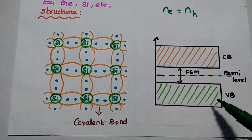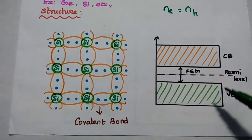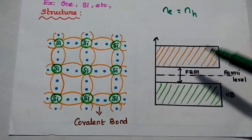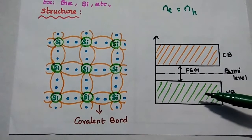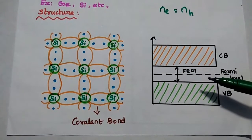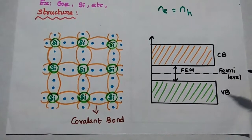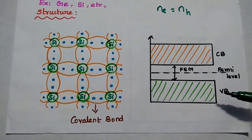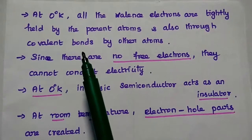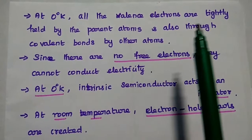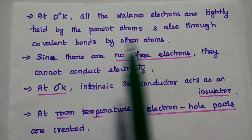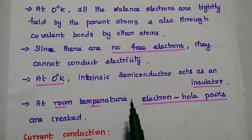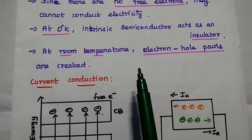This is the energy band diagram of the intrinsic semiconductor, showing the valence band and conduction band. Since the number of electrons in the conduction band and the number of holes in the valence band are equal, the Fermi level lies at the midpoint of the forbidden energy gap. The Fermi level is the highest energy level that an electron can occupy at 0 Kelvin. At 0 degrees Kelvin, all valence electrons are tightly held by parent atoms through covalent bonds, so there are no free electrons and they cannot conduct electricity.